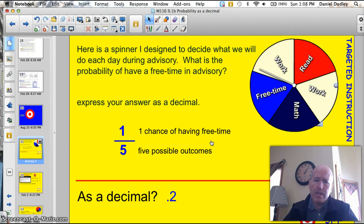Here's a spinner I designed to decide what we'll do each day during advisory. What is the probability of having free time in advisory? Well, we need to express our answer as a decimal. So the first thing we need to do is find out how many possibilities there are. 1, 2, 3, 4, 5. So there's 5 possible outcomes, and that's my denominator. We learned that last night. There's only 1 chance of having free time. So we have a 1 in 5 chance of having free time.